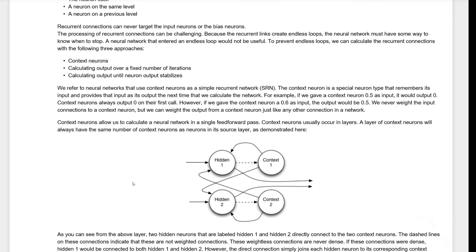There are definitely some similarities between all of these different types of recurrent neural networks. Recurrent neural networks usually have some concept of a context neuron. The context neuron represents a short-term memory. It holds a value between calls to the neural network. When you're trying to predict with the neural network, that is one call. Then you call it again and again as you predict, and the context neurons start out as zero but hold a value as subsequent inputs come in as a sequence is being processed.